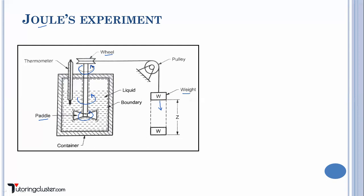Let's say you have lowered the weight by an amount z. That means you are performing some work, which is equal to m×g×z. This is the work input to the system. As this paddle is going to rotate, there will be a stirring action — the paddle will move with some speed through the liquid.